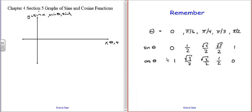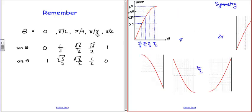Instead of plotting these as coordinates on the unit circle, we're going to plot them as a function — the sine of theta as a function of theta. With the values we have for sine: at theta = 0, we get 0; at π/6, we get 0.5; at π/4, we get √2/2 ≈ 0.707; at π/3, we get √3/2 ≈ 0.866; and at π/2, we get 1.